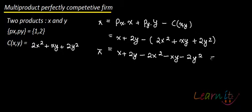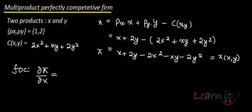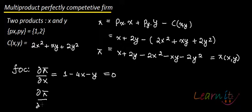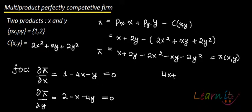This profit function is in X and Y, so we apply the first order conditions by calculating two partial derivatives. The first is ∂π/∂X = 1 minus 4X minus Y = 0, and the second is ∂π/∂Y = 2 minus X minus 4Y = 0. Simplified, these give us 4X plus Y = 1 and X plus 4Y = 2.